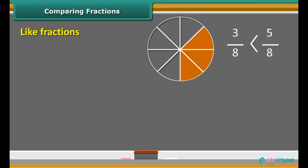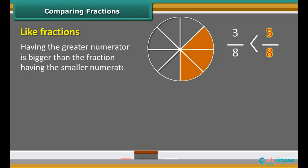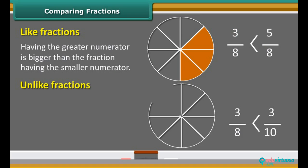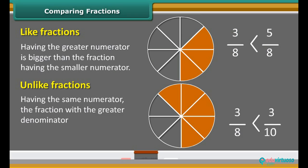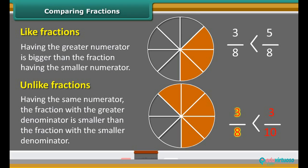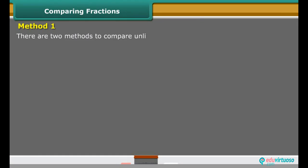In like fractions, the fraction having the greater numerator is bigger than the fraction having the smaller numerator. In the case of unlike fractions having the same numerator, the fraction with the greater denominator is smaller than the fraction with the smaller denominator.